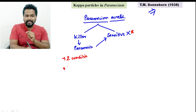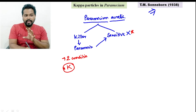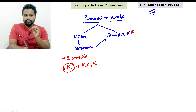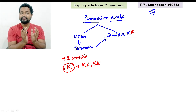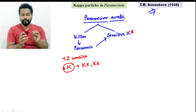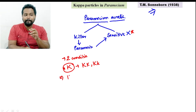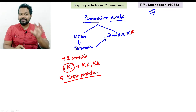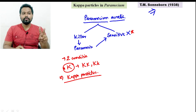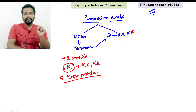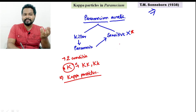This condition involves the gene. The K gene — capital K gene — in homozygous condition, or either dominant heterozygous condition, maintains the killer property. This sensitive strain is in a recessive state — small k, small k.